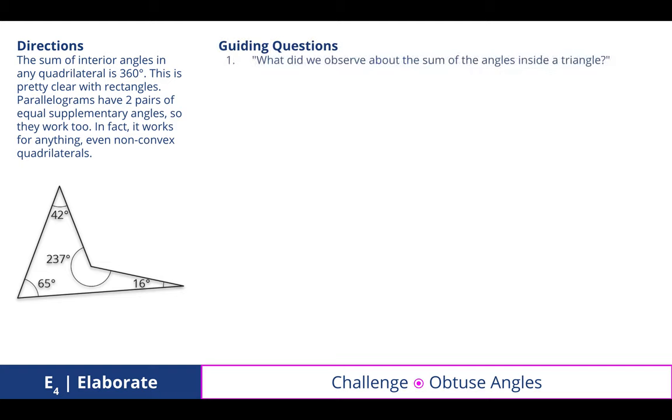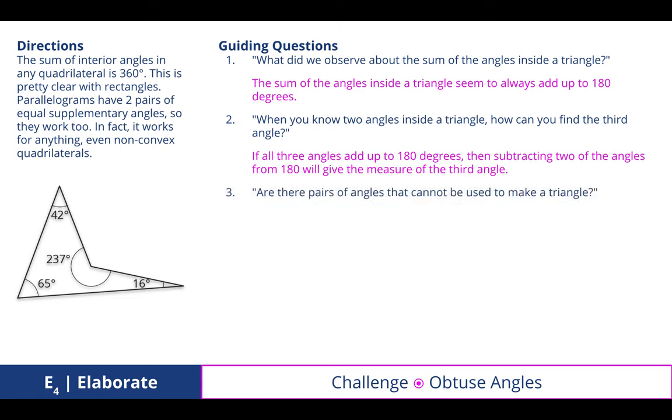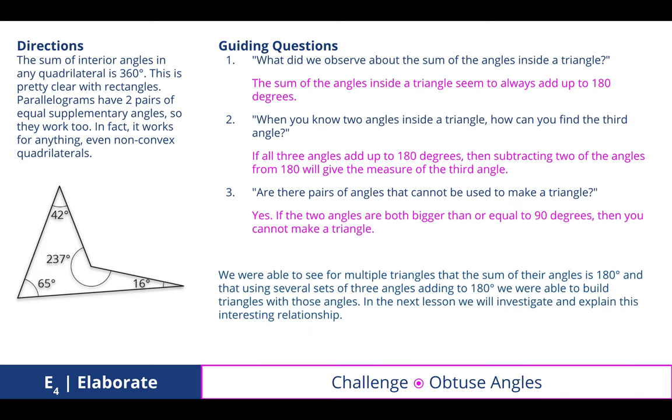So some guiding questions for this one. What do we observe about the sum of the angles inside a triangle? That the sum of the angles inside a triangle seem to always add up to 180 degrees. When we know two angles inside a triangle, how can we find the third angle? If all three angles add up to 180, then we can subtract two of the angles from 180. That will give the measure of the third angle. And are there pairs of angles that cannot be used to make a triangle? Yes. If the two angles are both bigger than or equal to 90 degrees, then you cannot make a triangle. We were able to see for multiple triangles that the sum of their angles is 180 degrees, and that using several sets of three angles adding to 180, we were able to build triangles with those angles. In the next lesson, we will investigate and explain this interesting relationship.